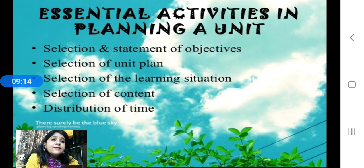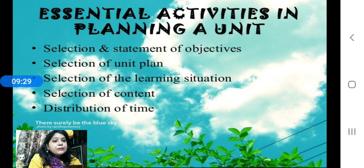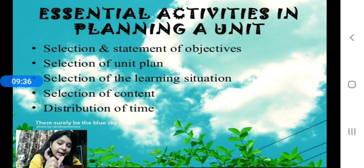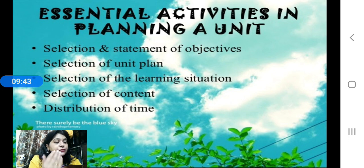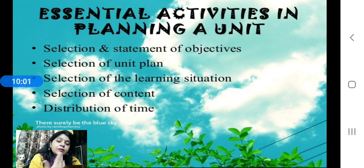Now come the essential activities in planning a unit. When we plan a unit, how do we start and how do we proceed? The first is selection and statement of objectives — you have to select and then write in the form of a statement what objectives you want to achieve from this unit. After selection, you write them in the form of a statement. Then, selection of unit plan type — what type of unit plan you will make, whether for resources, specification, or teaching-learning.